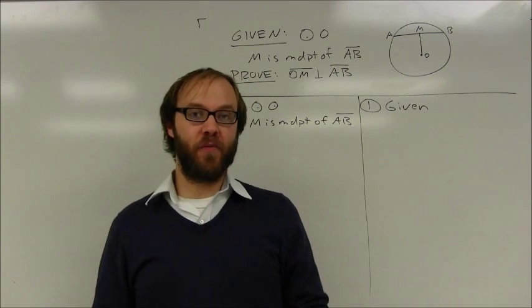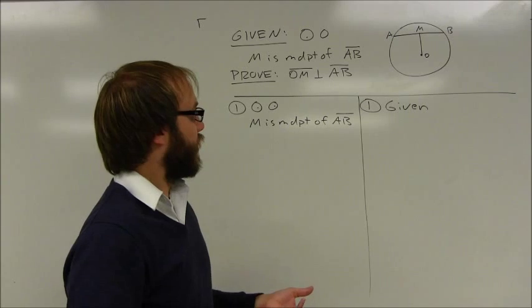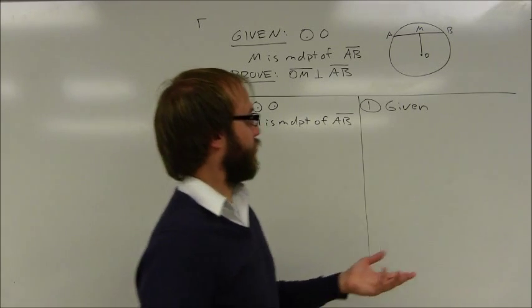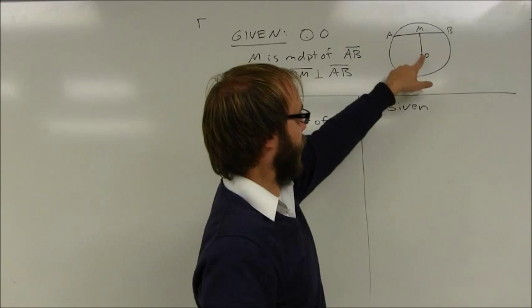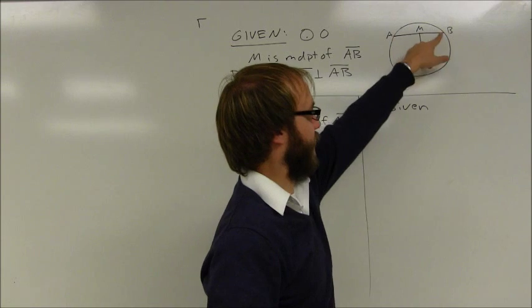This is a proof that could be done in one of two ways. This could be done using congruent triangles and basically using a detour proof. I could prove the two triangles here congruent by side, side, side using two congruent radii.